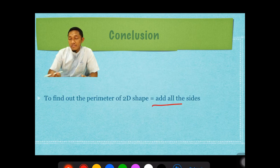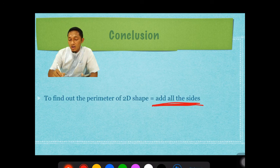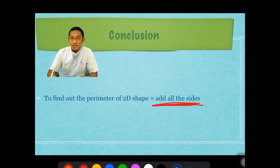So I will give you the conclusion. Kesimpulannya apa? If we want to find out the perimeter of 2D shapes, just add all the sides. Jumlahkan semua panjang sisinya. We can find out the perimeter of 2D shapes.